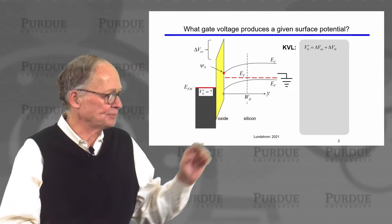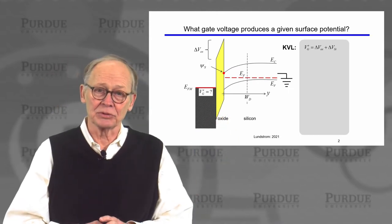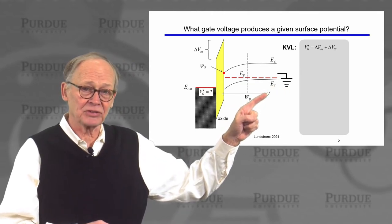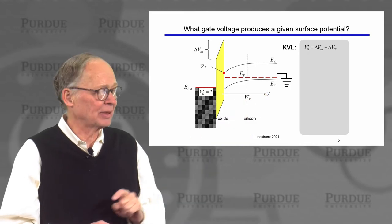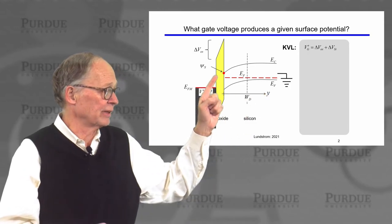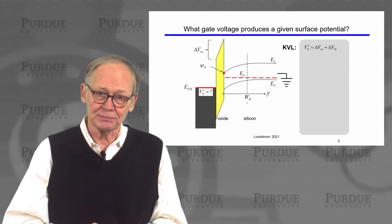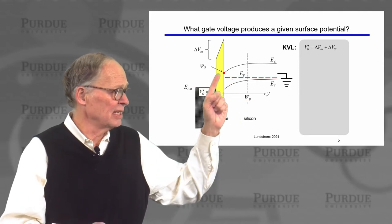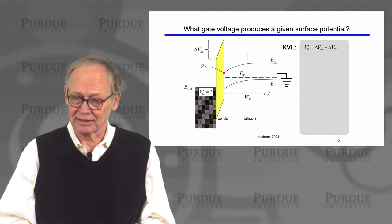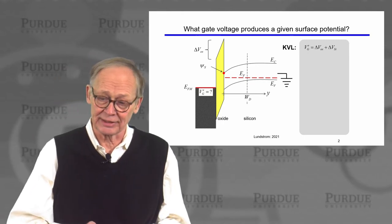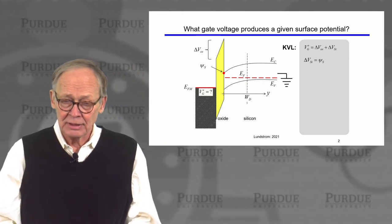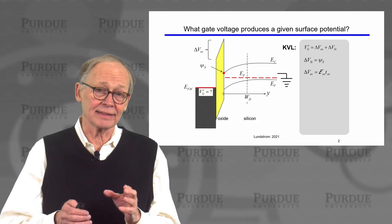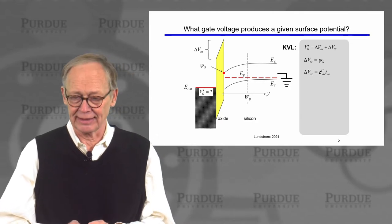Here's an energy band diagram and we're going to add up the voltages with Kirchhoff's voltage law. The potential in the bulk of the semiconductor, deep inside the semiconductor, is zero. The potential at the surface is ψs — that's our surface potential. So the voltage drop across the semiconductor is the surface potential. There's also a voltage drop across the oxide, ΔVox. We add the two and that's the voltage on the gate. The volt drop in the semiconductor is the surface potential.